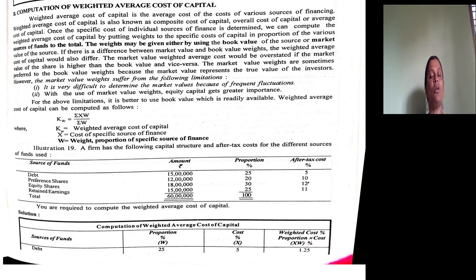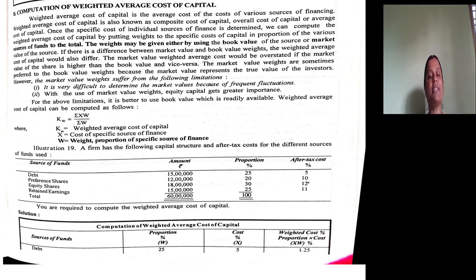Market value weight suffers from certain limitations. It is very difficult to calculate exactly what the market value of a particular source of capital is, due to frequent fluctuations. Also, with the use of market value weight, equity capital gets too much importance. Because of all these limitations, we concentrate on book value weight rather than market value weight.